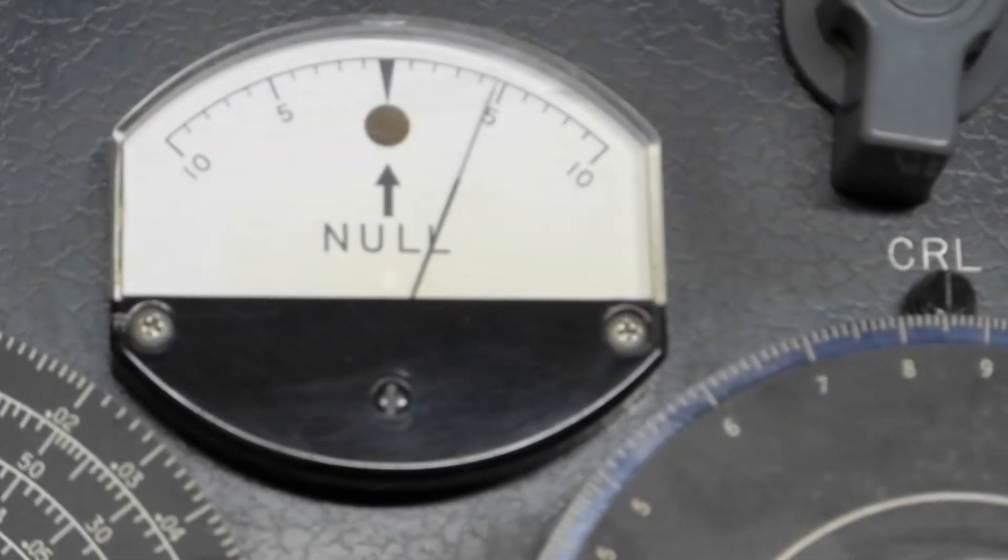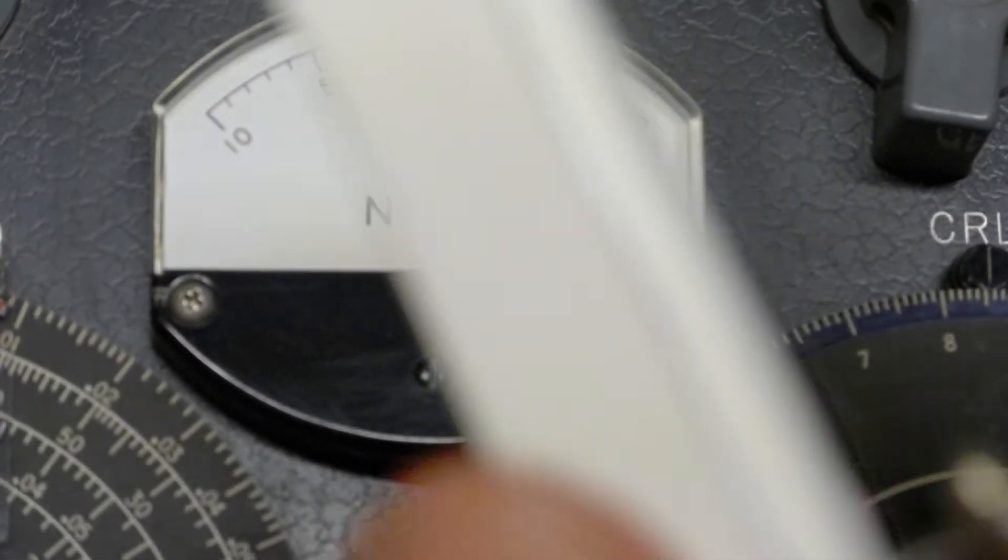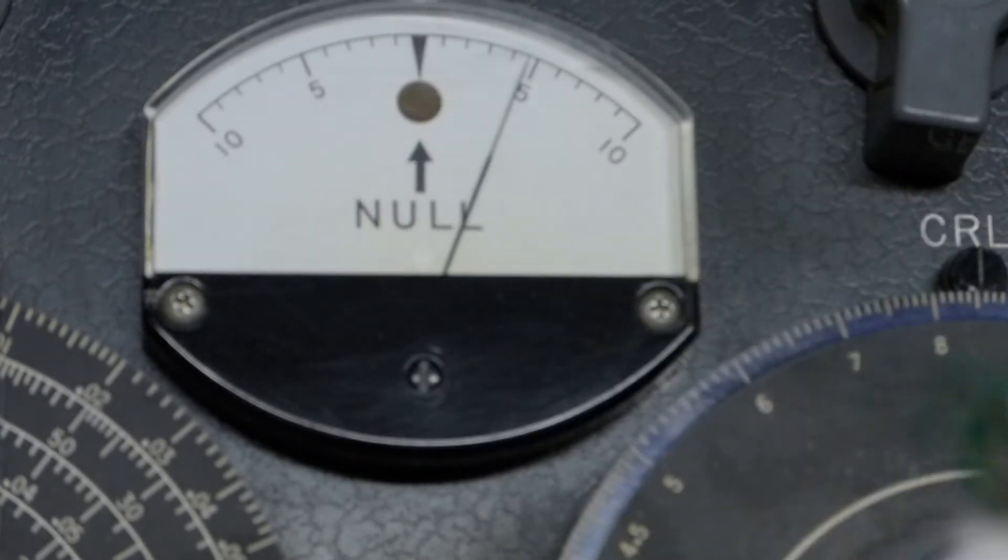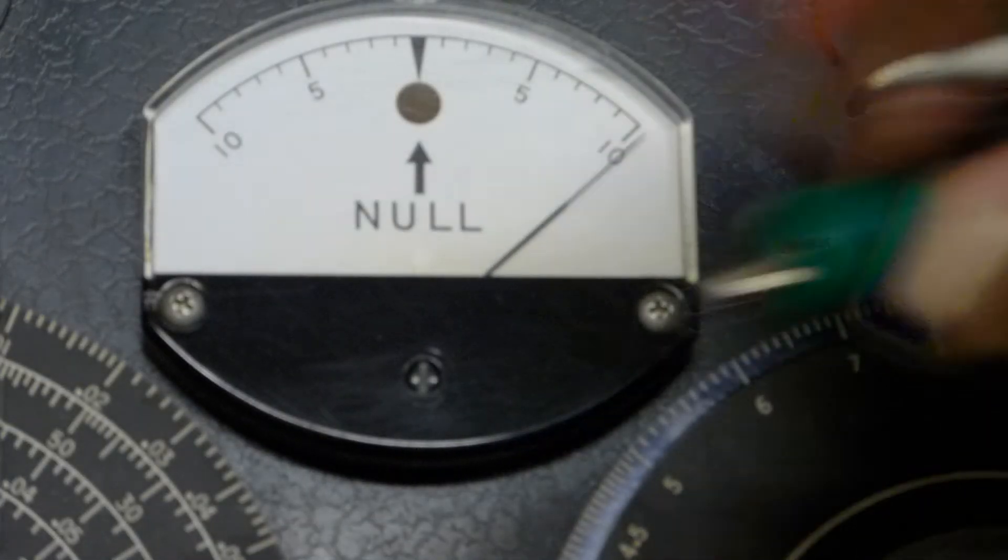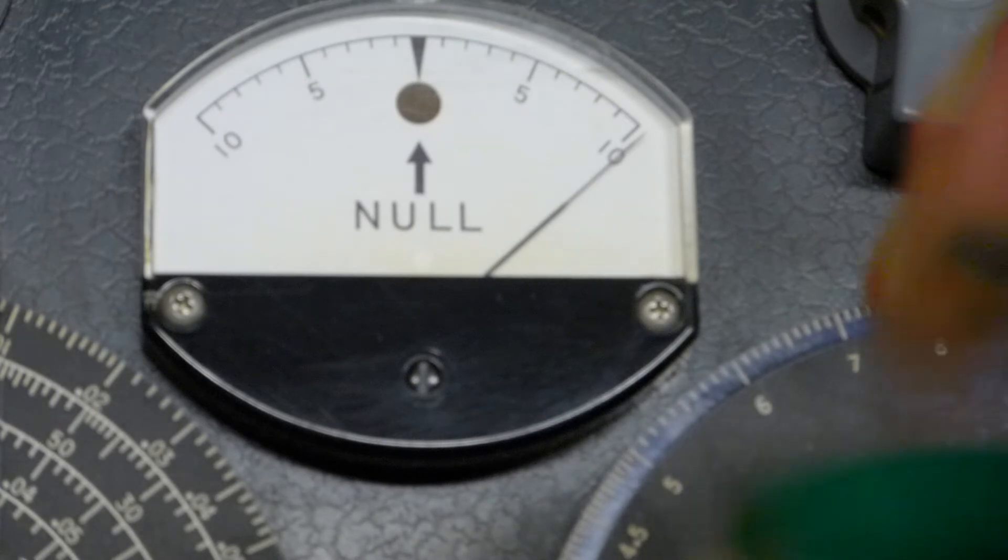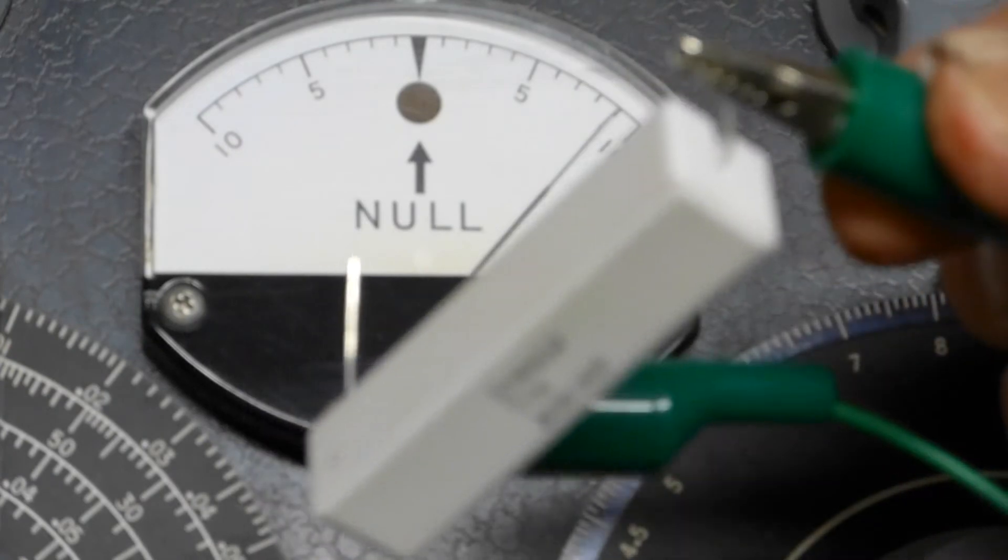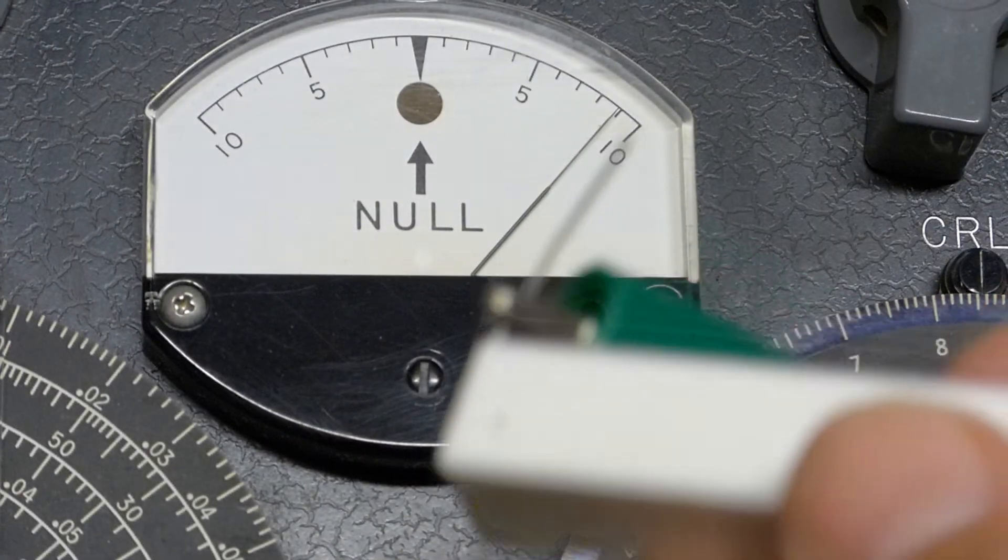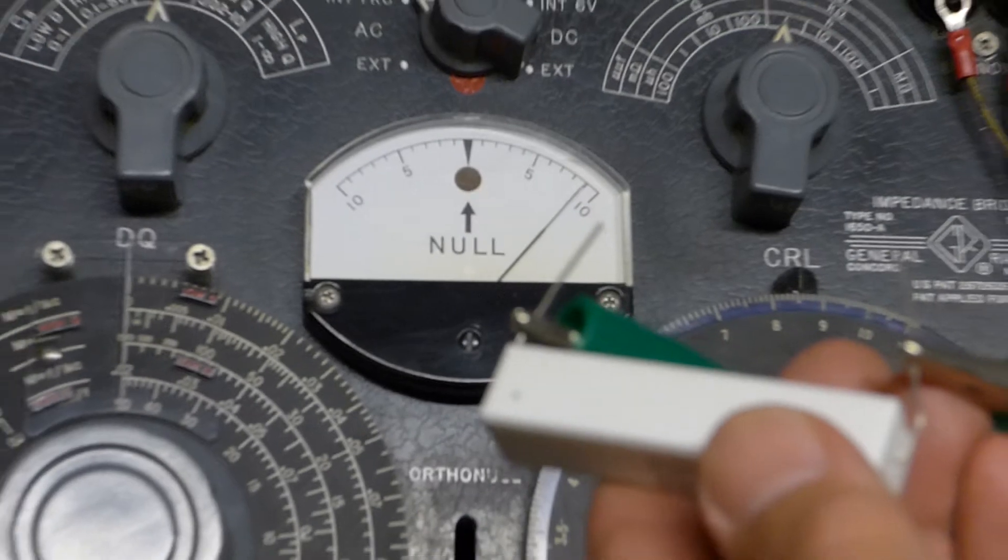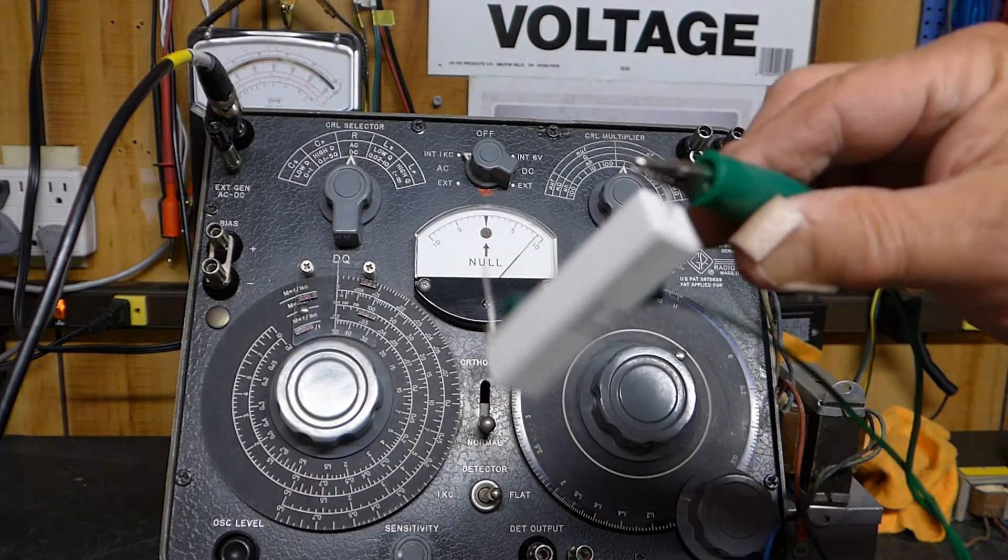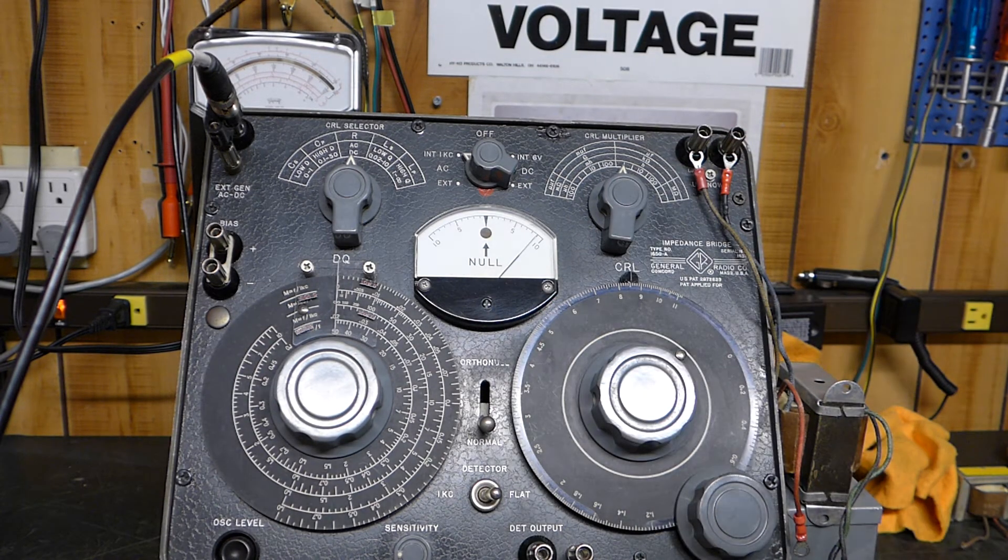Now if we change the load here from 4 ohms - this is two 8-ohm resistors - give the camera time to focus. If we change this to one 8-ohm resistor, we expected the primary impedance to be around 16K. So now we've got this resistor on there.